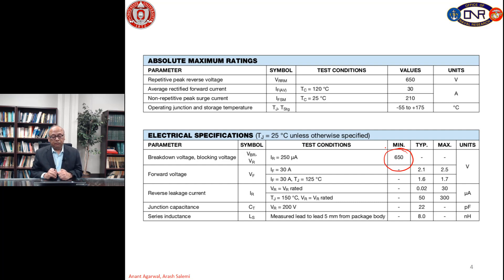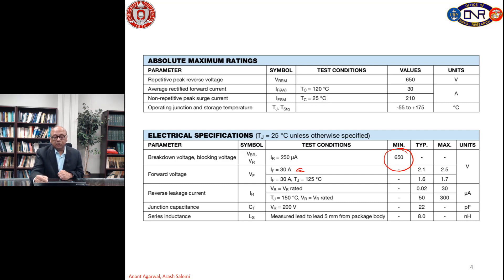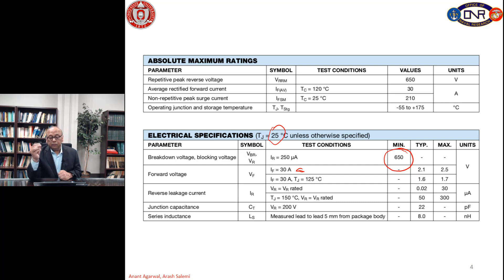Looking at the forward bias conditions, typically the diode will carry 30 amps at 25 degrees C, and the forward voltage on the diode would be 2.1 volts. Typical maximum they allow is 2.5 volts. So typically 2.1 volts at 30 amps at room temperature, junction temperature could rise to 2.5 volts.